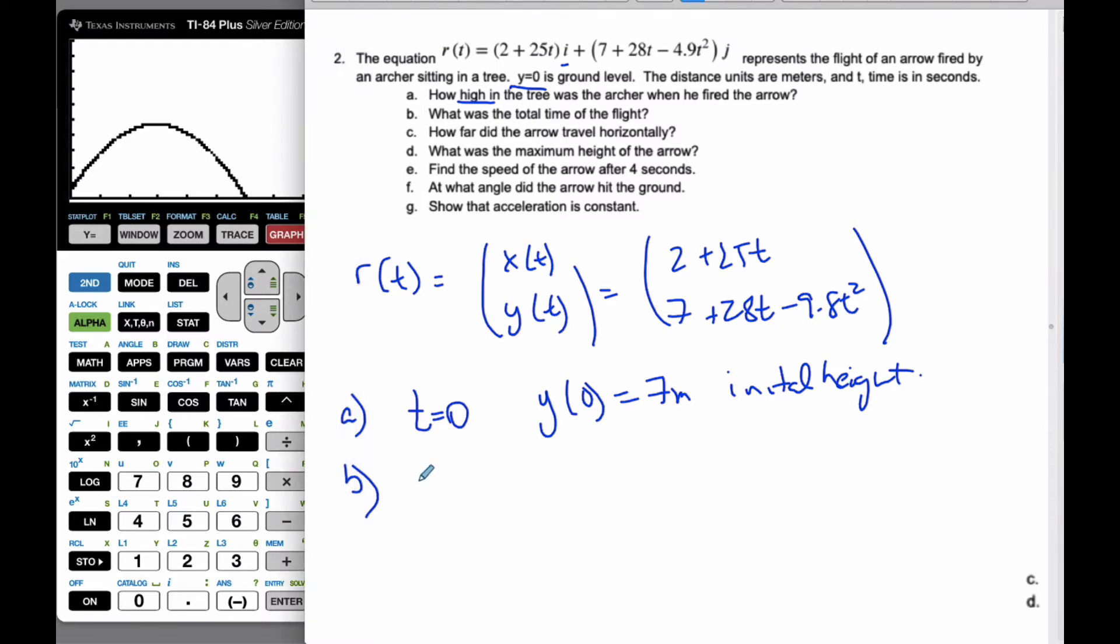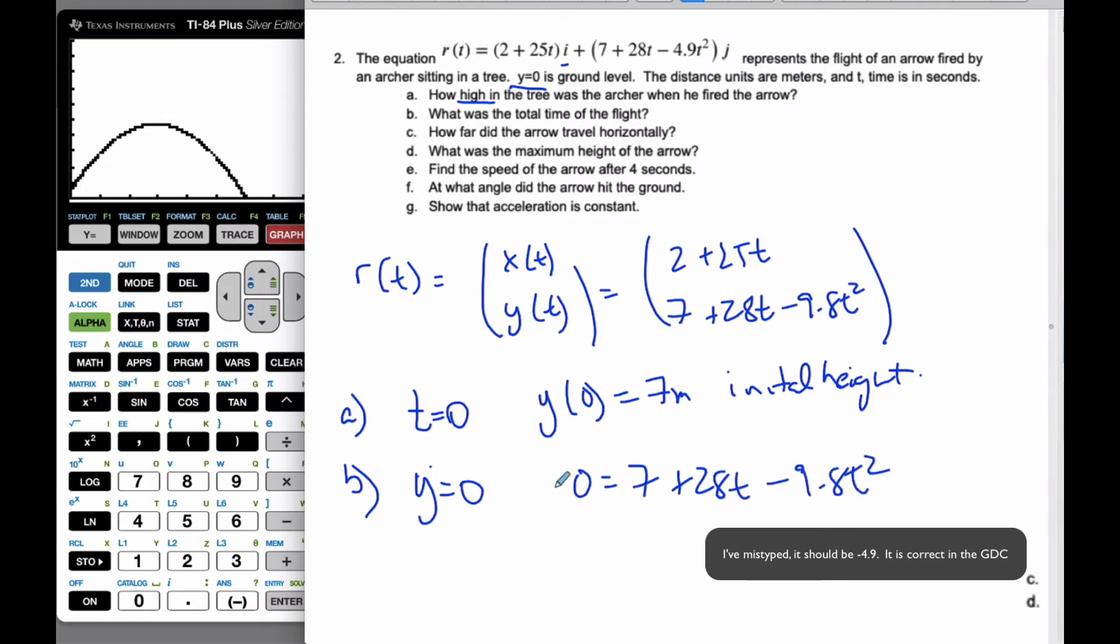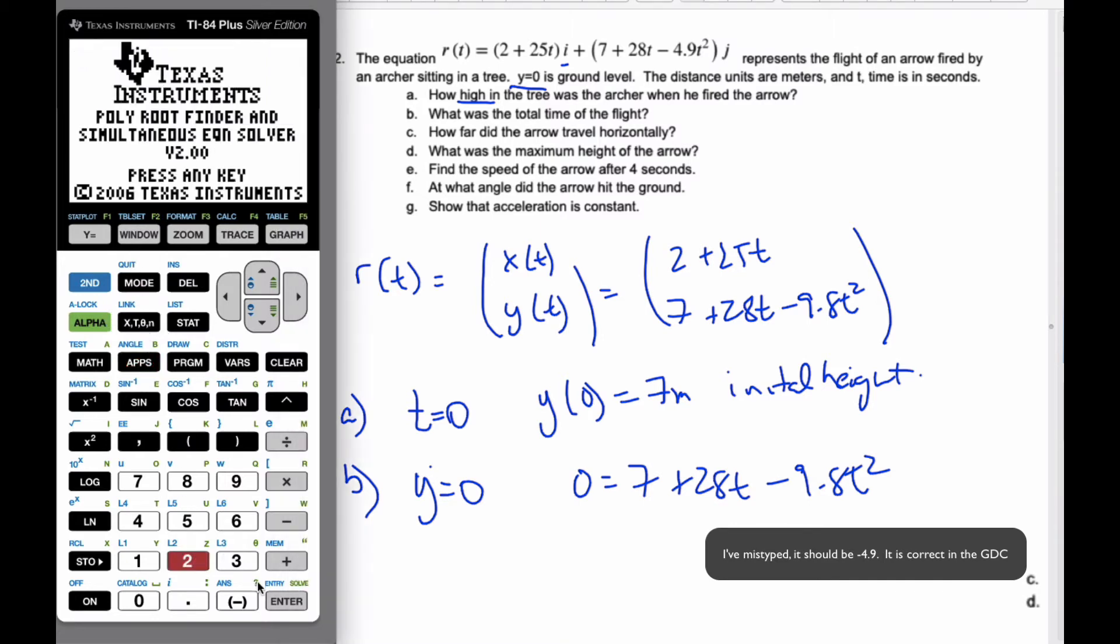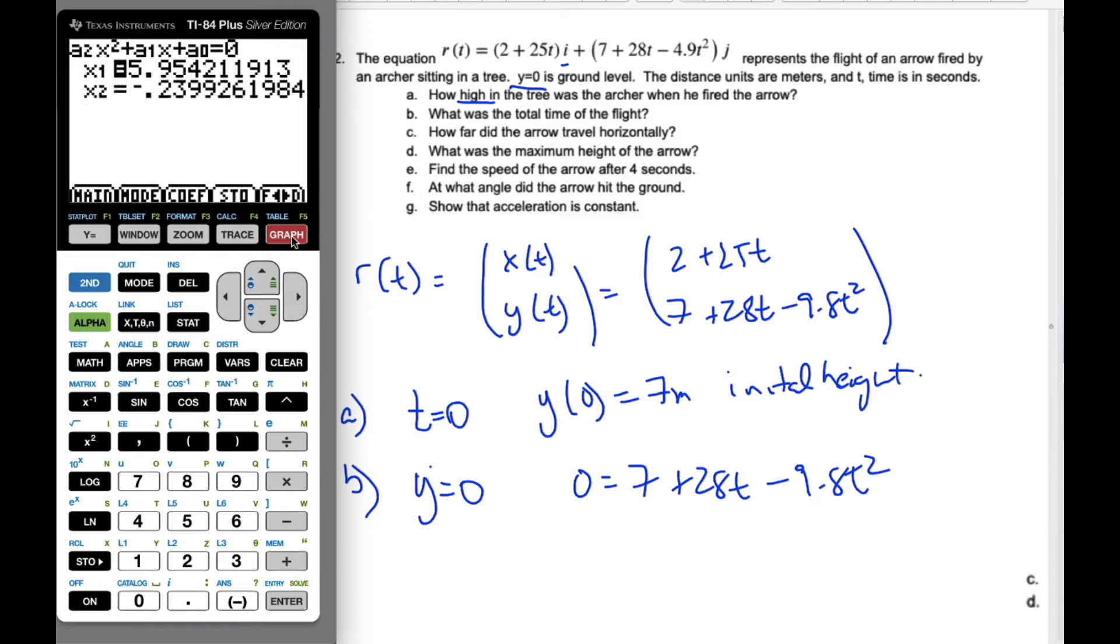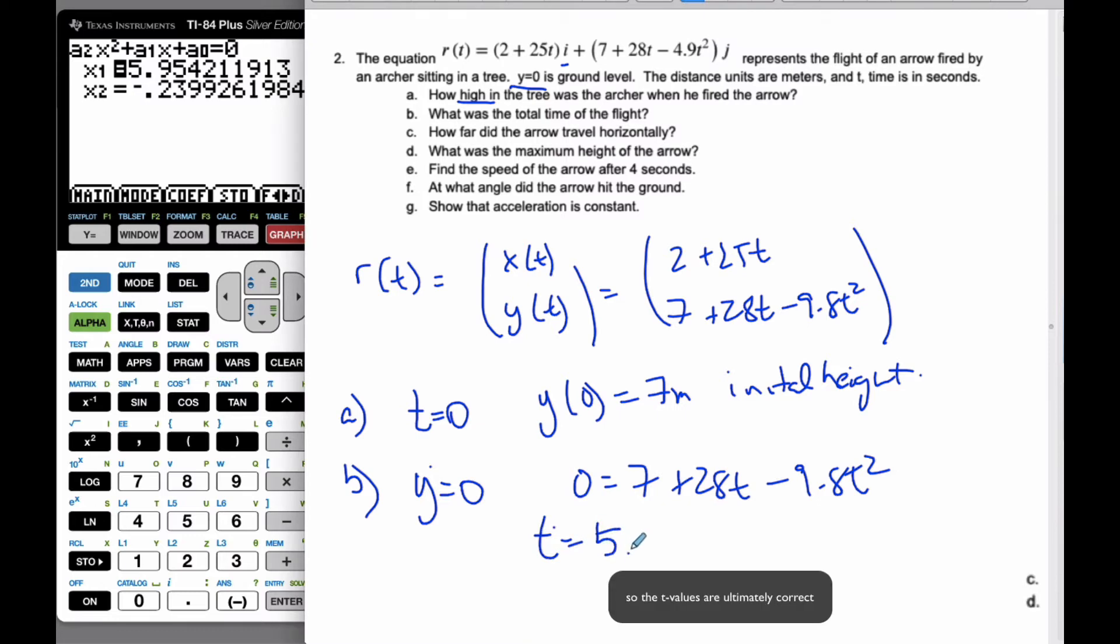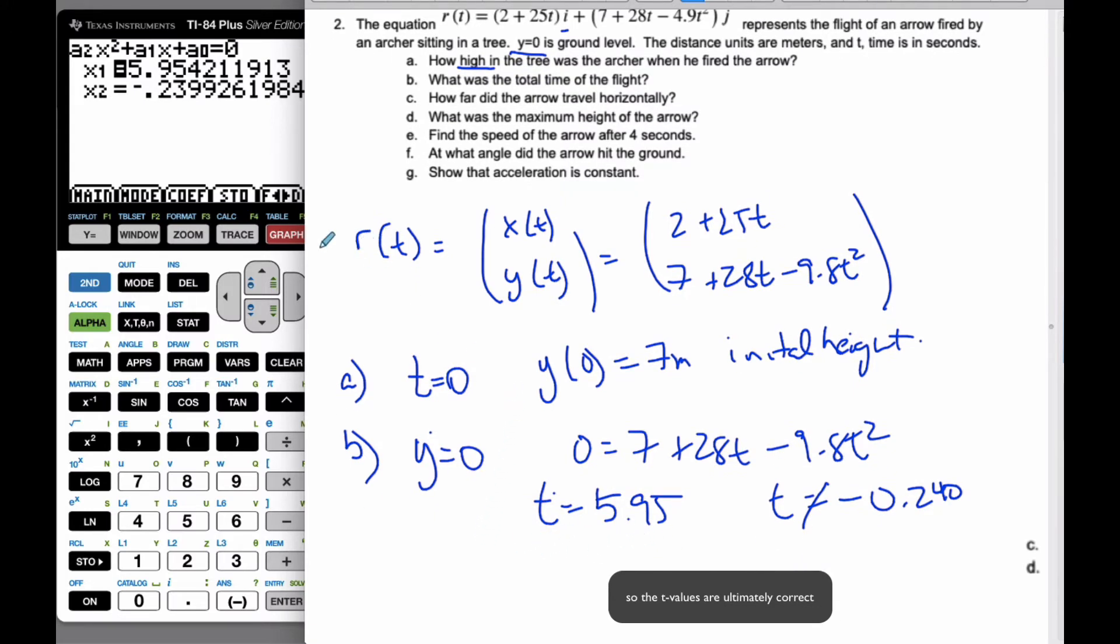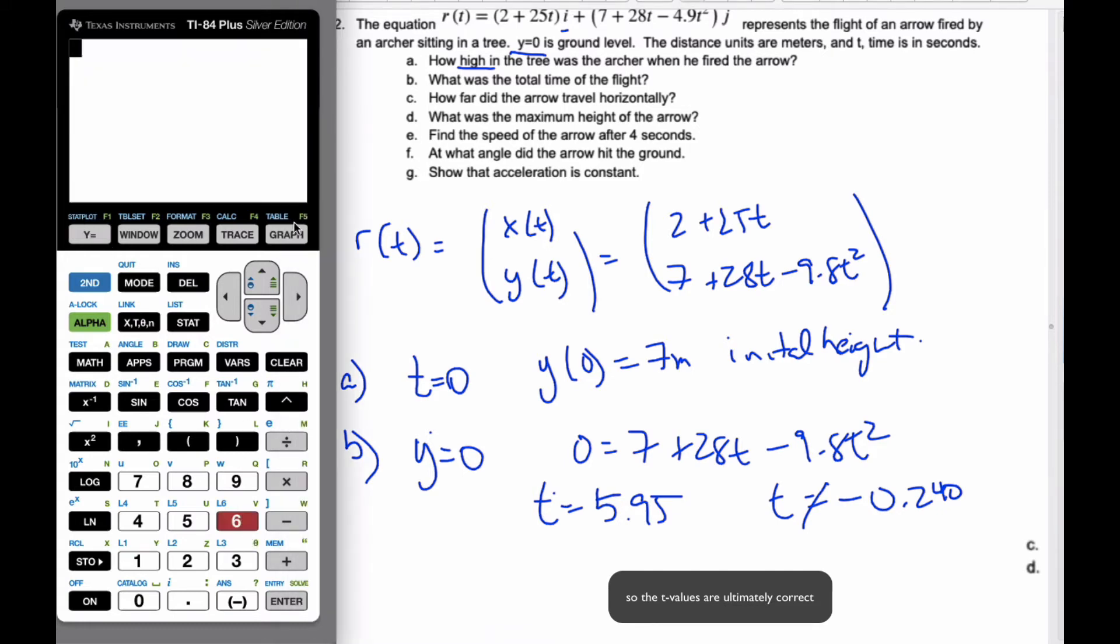That means when my height, my y value equals 0, when y is 0 it's going to hit the ground. That will give me a time. So with y = 0, I get 0 = 7 + 28t - 9.8t². To find t, if I go to my applications, polynomial simultaneous equation solver root finder, I've typed the values in already. If I hit graph, I end up with time = 5.95 or time = -0.240, which is impossible because it's negative. So at time t = 5.95, that's when it hits the ground.